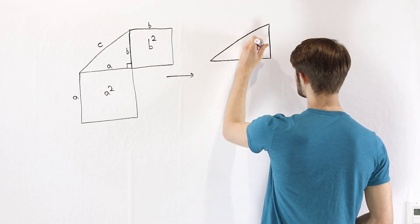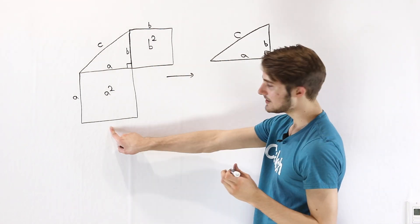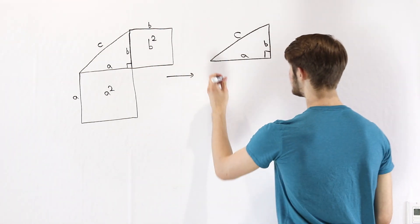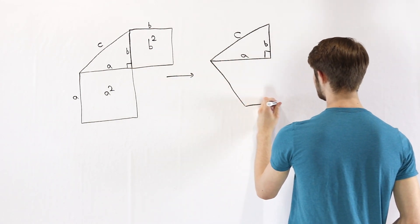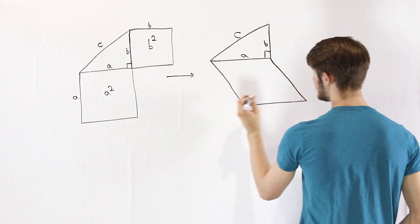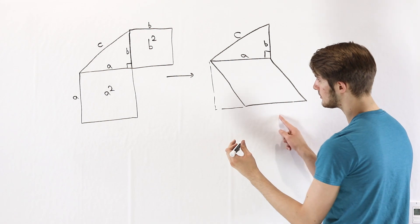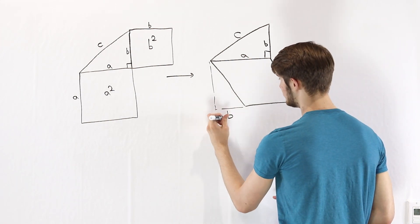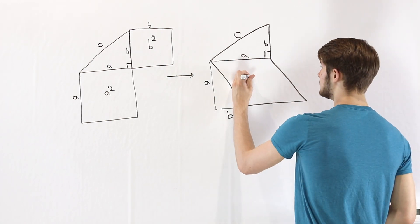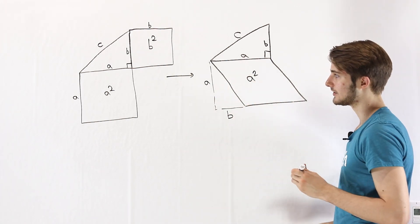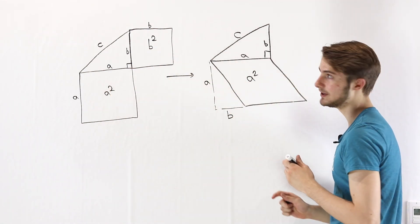We're going to start with the same triangle with lengths a, b, c, and a right angle. But instead of keeping our square, we're going to turn it into a parallelogram — specifically one where the base has been shifted to the right by a distance of b. The height is still a and the base is still a, which means the area of this parallelogram is still a squared. It's the same square, but we've shifted it a little bit.